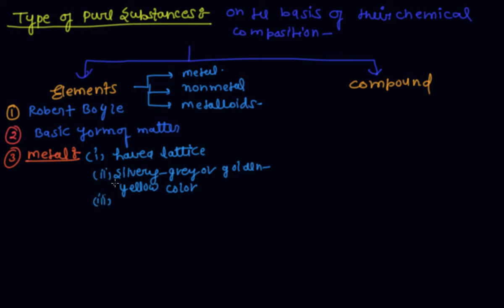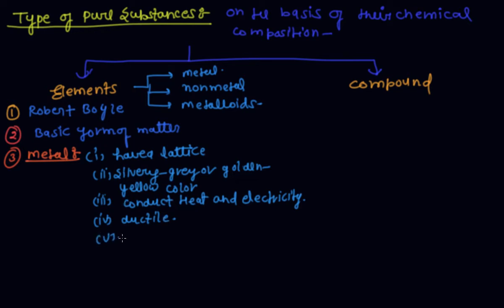Third, metals conduct heat and electricity. Fourth, they are ductile, meaning they can be drawn into wires. Fifth, they are malleable, meaning they can be hammered into thin sheets. Sixth, they are sonorous, meaning they make a ringing sound when hit.